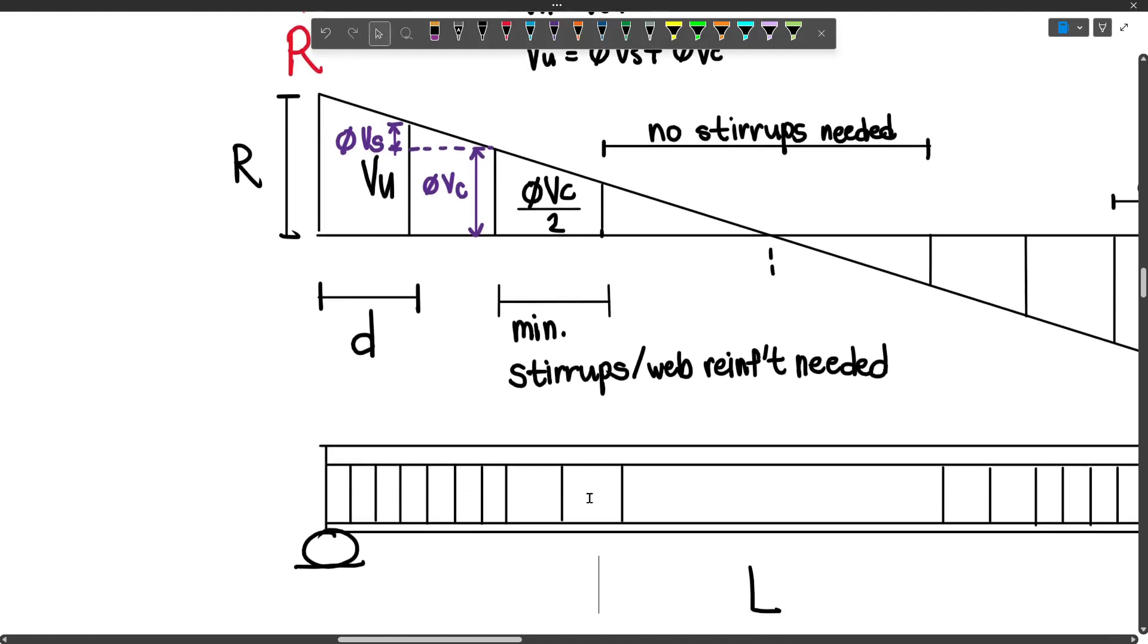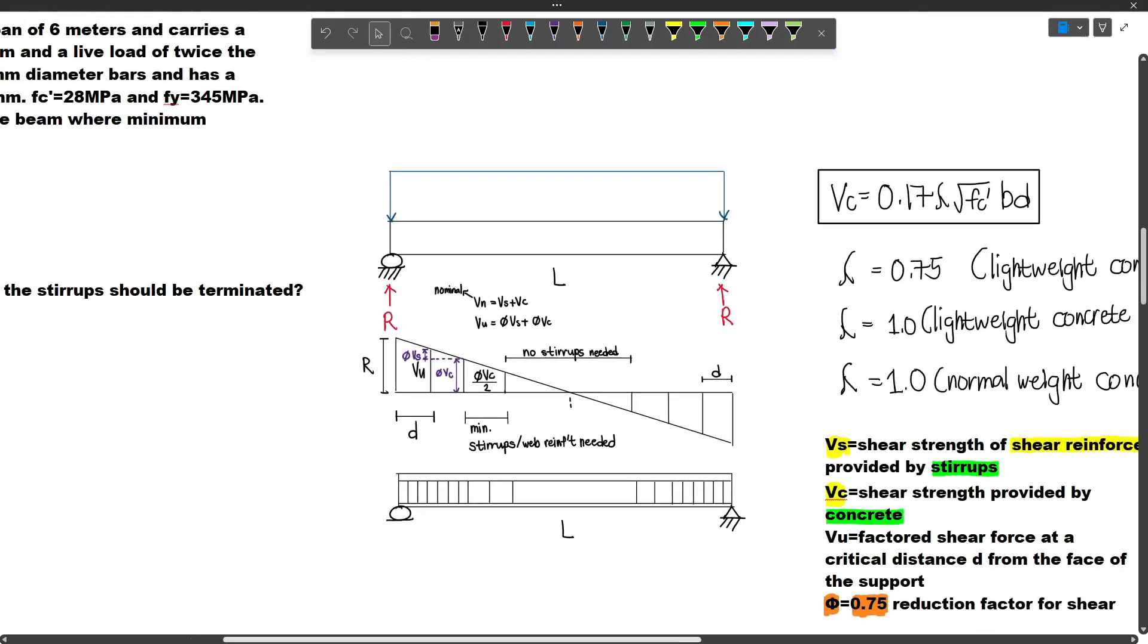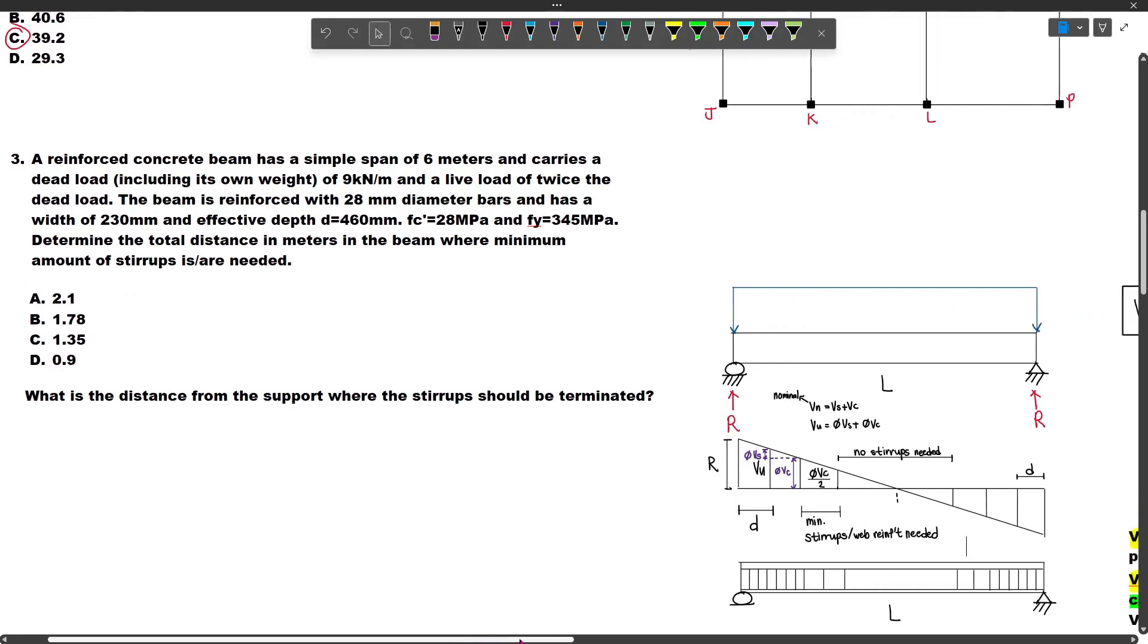However, from phi VC toward phi VC over 2, or half the factored shear strength provided by concrete, the spacing is larger. This means we don't need to place as many stirrups there. Beyond the distance where you reach half the factored shear strength provided by the concrete toward the point of zero shear, no stirrups are needed because that portion has negligible shear value. So there are no stirrups in that part. Now, back to the problem.